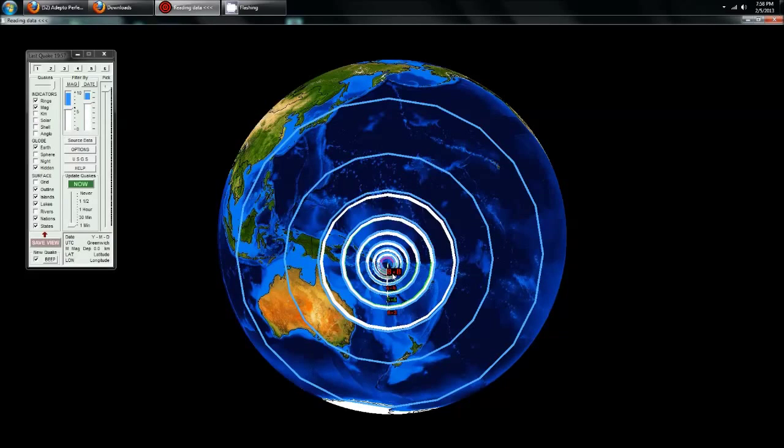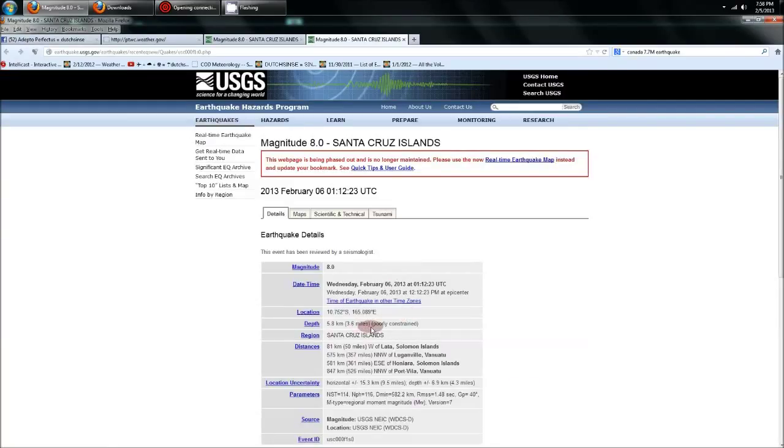An 8.0 magnitude earthquake just struck off the shores of Santa Cruz Islands. There's a regional tsunami warning issued for the entire area. The stats: 3.6 miles deep, that's 5.8 kilometers. That's fairly shallow for this size of earthquake, folks.